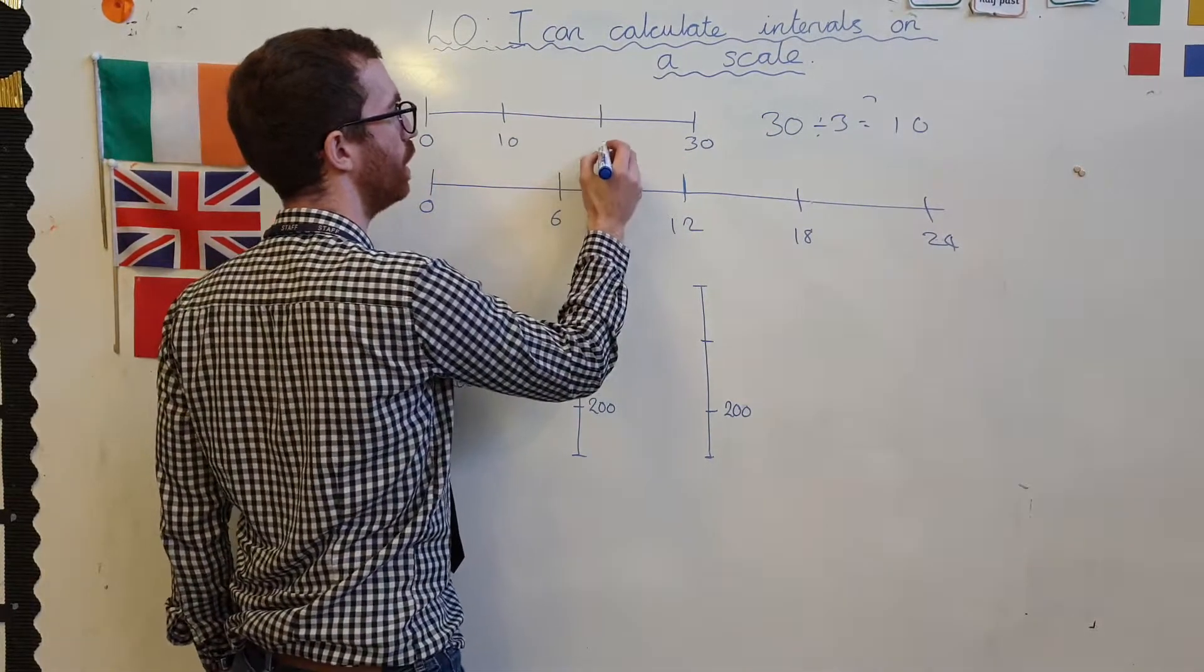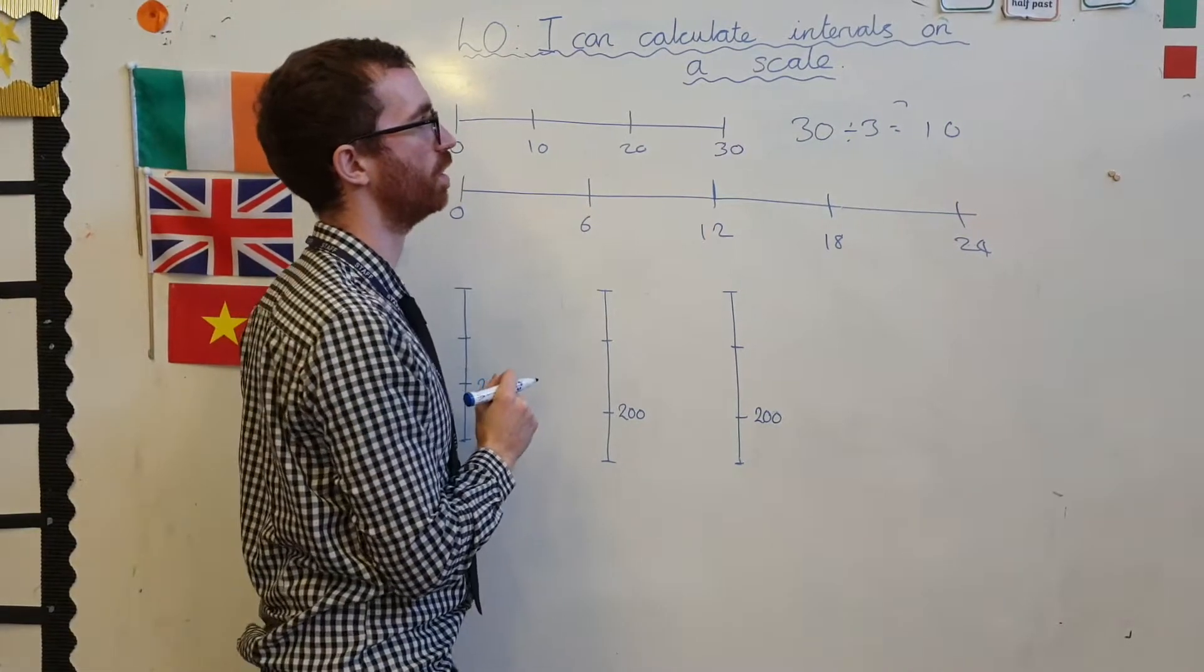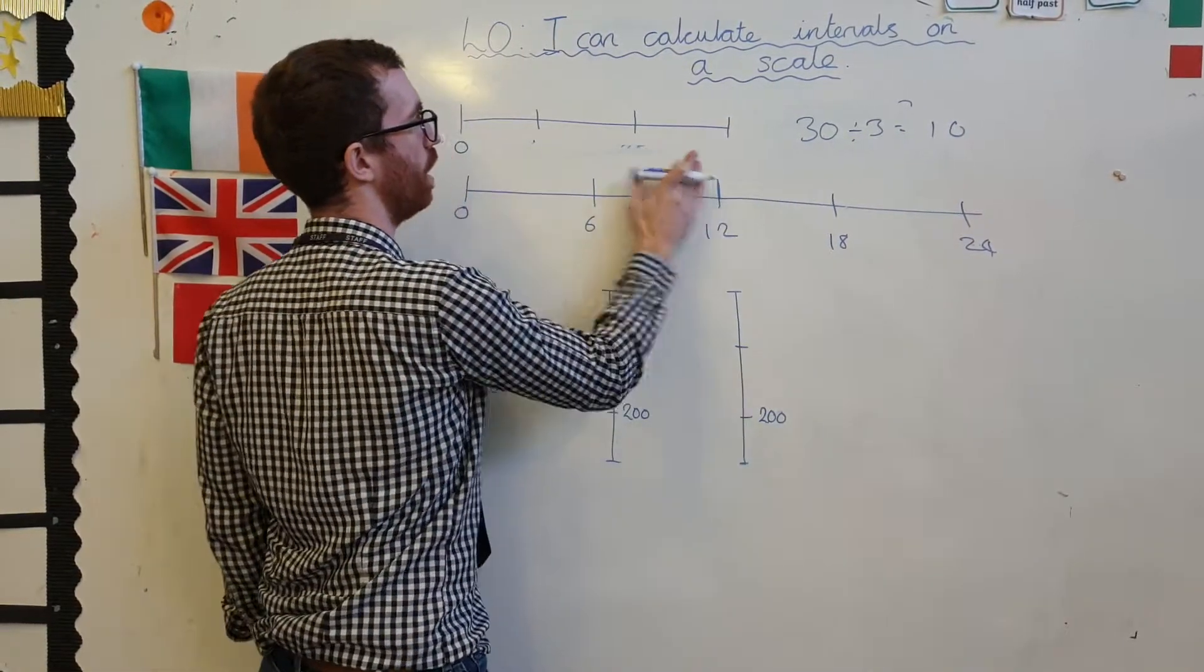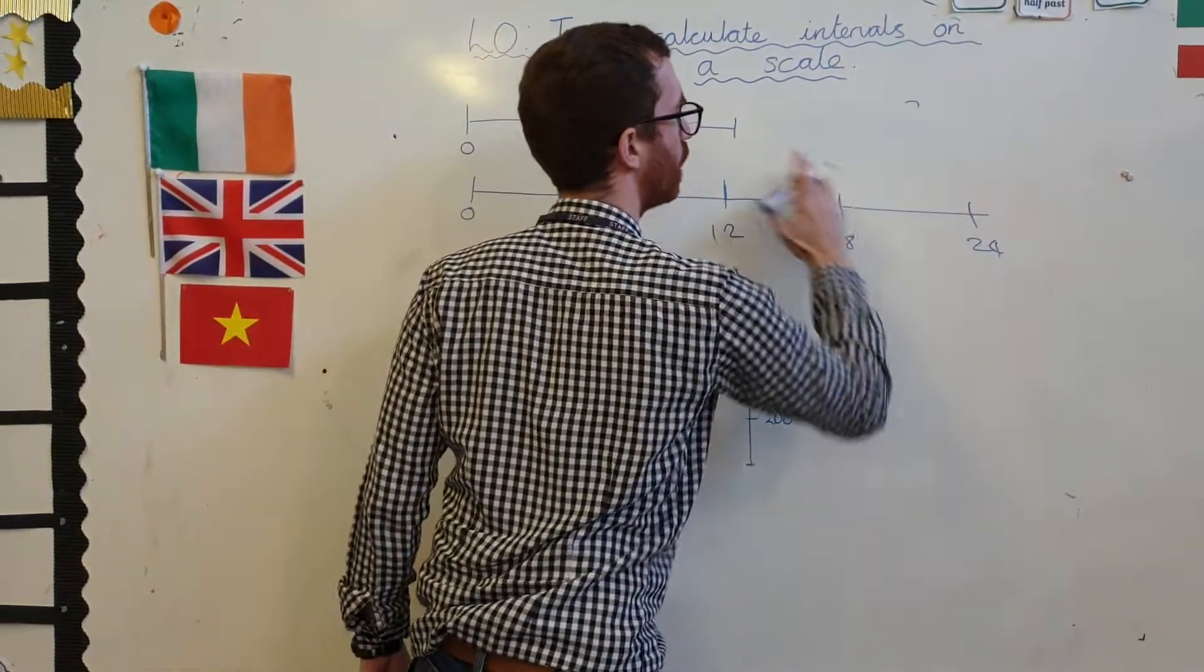So each of these must be 10, 20, 30. Yeah? I mean, I could have done any selection of numbers.